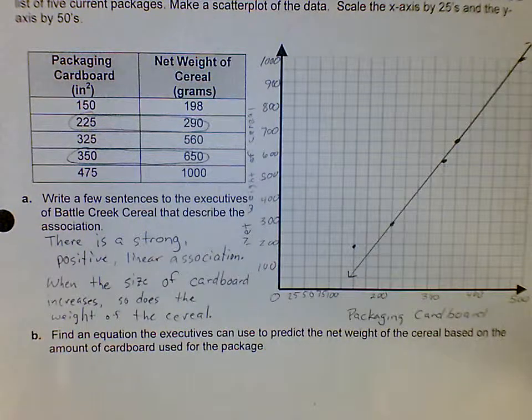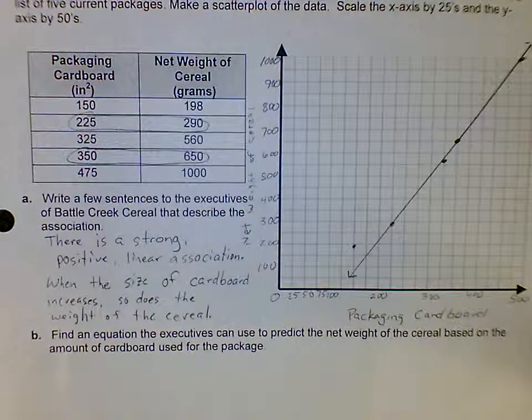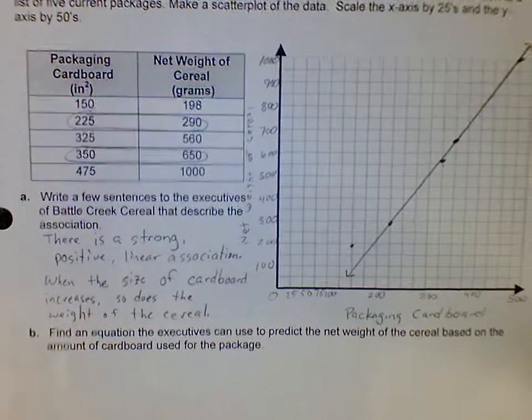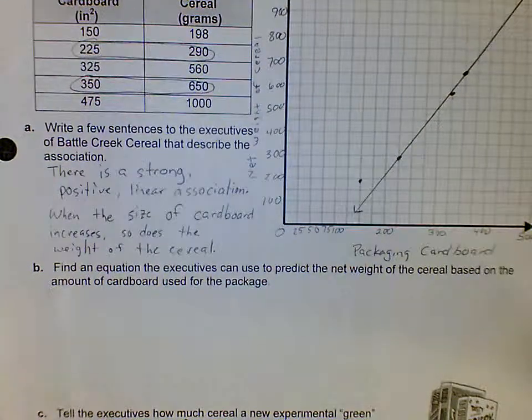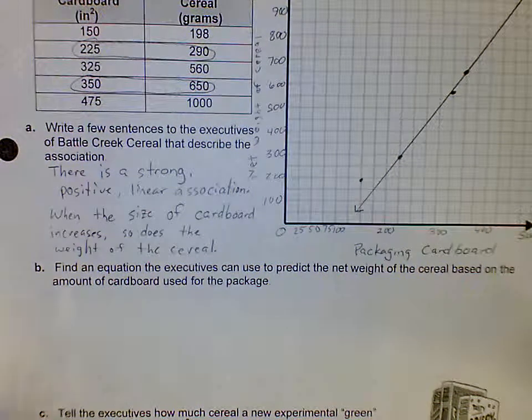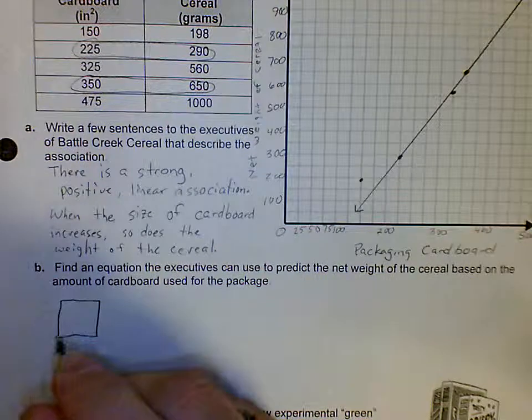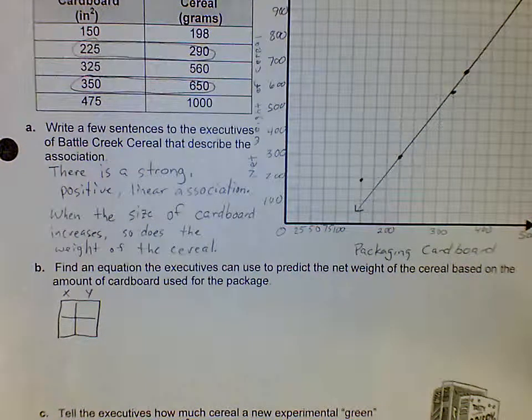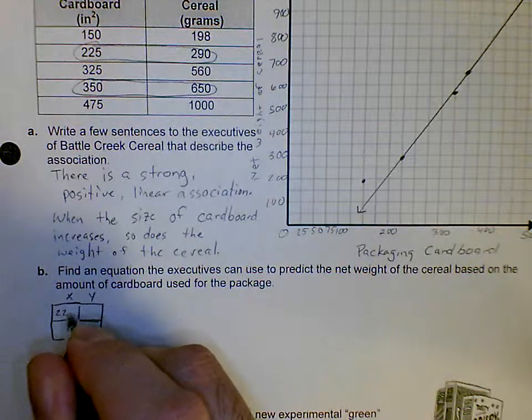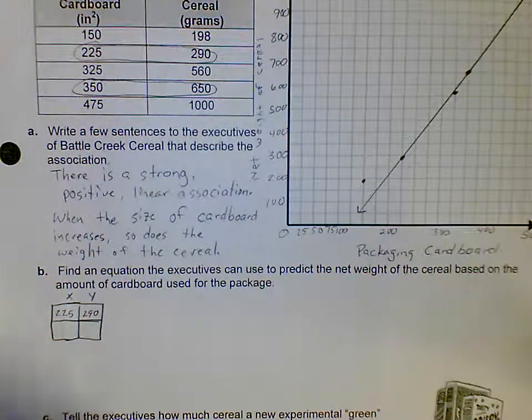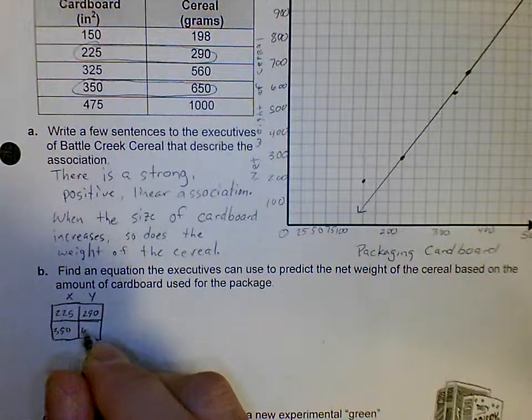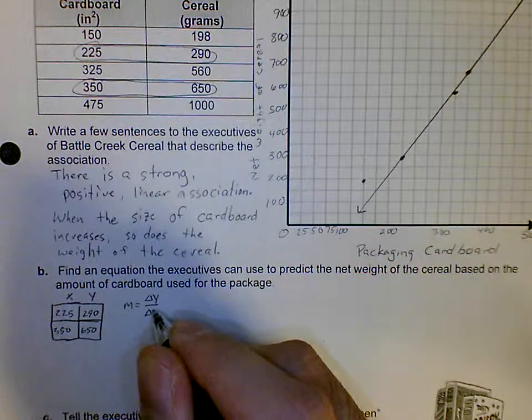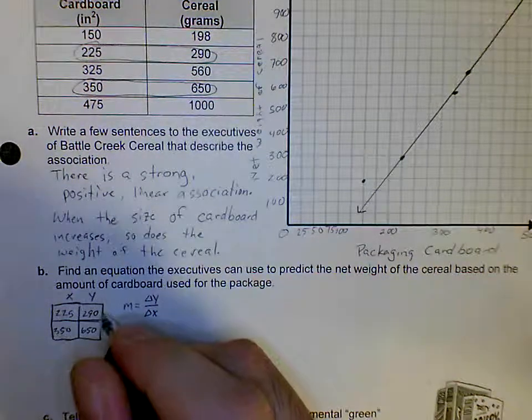Now we have to find an equation. Remember, to find an equation you need two things: you need to find the slope, then you need to solve for the y-intercept. First thing I'm going to have you tell me is what is the slope. In order to find the slope we start with our box and our two points. My first one is 225 comma 290, my second point is 350 comma 650. Remember your slope is change of y over change of x.